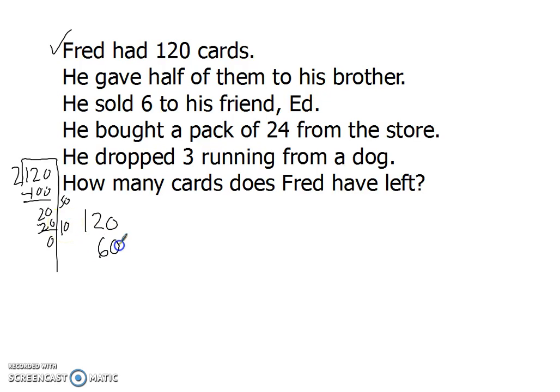50 plus 10 is 60. So he gave half to his brother. That would be 60. It also means he's going to have half left, right? So he's got 60 of them left. Sold 6 to his friend. If you sold them, he got rid of them. We're now at 54.